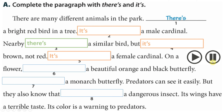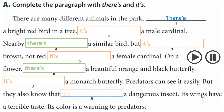Okay guys, are you ready? For number six, the answer is 'there is a beautiful orange and black butterfly'. And after that it's 'it's', and 'it's', because we still refer to this butterfly.